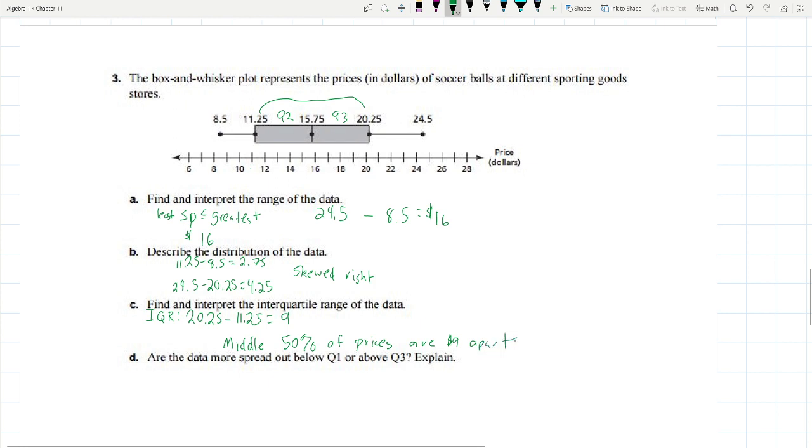Are the data more spread out below Q1 or above Q3? We actually already figured this out. We figured this out in the distribution of the data. We found that it's more spread out above Q3. Remember, this is above Q3. And you can just look at the number, 24.5 and that has the 11.25. So it's more above Q3. It's skewed right.